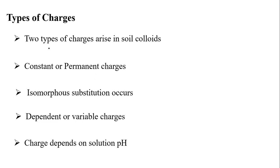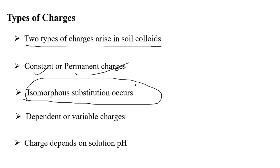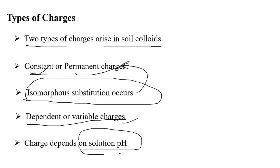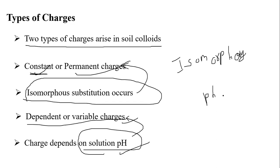There are two types of charges arising in soil colloids. One is called constant or permanent charge, which occurs due to isomorphous substitution. The other is called variable charge, which is completely dependent on the soil solution pH. So isomorphous substitution gives permanent charge, and pH plays a major role in variable charge.